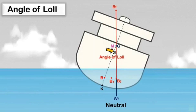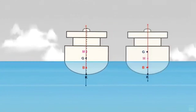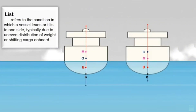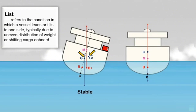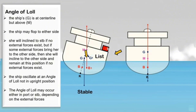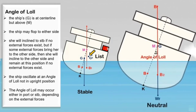Let us compare the two conditions. List refers to the condition in which a vessel leans or tilts to one side, typically due to uneven distribution of weight or shifting cargo on board. If the ship is in stable condition and a weight is added to one side, the ship's center of gravity moves toward the center of gravity of the weight being loaded. The new center of gravity is at G1, which is off the centerline — as a result, the ship is listing toward that side. At the angle of loll, the ship's center of gravity remains along the centerline; it is a result of the ship being in an unstable condition.